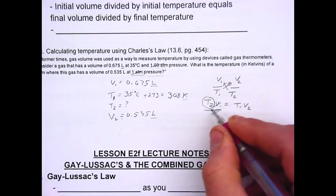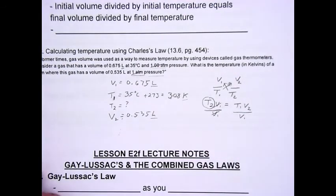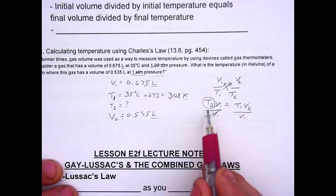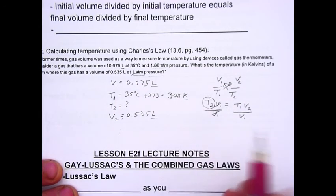Of course, what I do to one side, I have to do to the other. So, I also divide by V1 on that side. So, my formula is T2 is equal to T1 times V2 divided by V1.